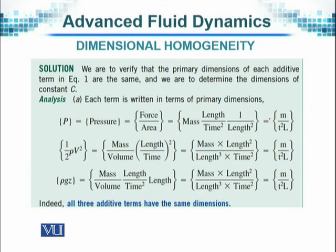The second term is half rho times V squared. Half is a constant, so it will have no dimension. Rho is density, which is mass per unit volume, times V squared, and velocity is distance over time. So for density we have mass over volume, and for velocity we have length over time squared. When we simplify and cancel out the terms, we are left with M over T squared times L.